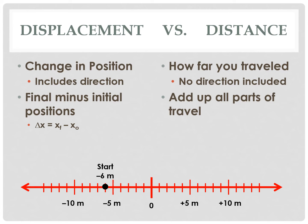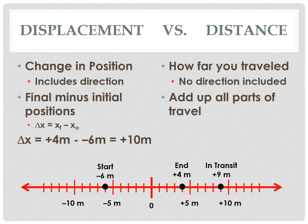Let's start at negative 6 meters, go to positive 9 meters, and then come back to positive 4 meters. For displacement, we look at the final position and the initial position — we disregard what happens in between. So the fact that we went to 9 meters in between means nothing for displacement. We start at negative 6 and end at positive 4, so final minus initial is positive 4 minus negative 6, giving us positive 10 meters to the right.